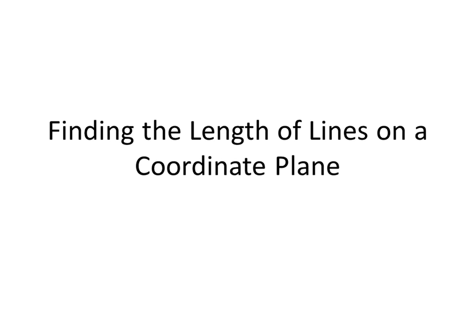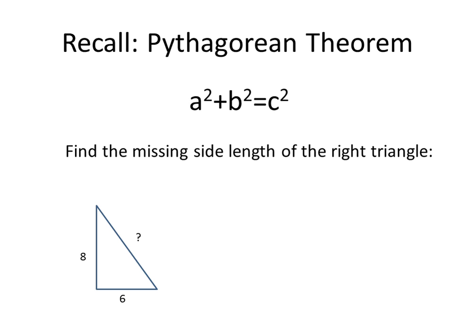We are starting a new standard called coordinate geometry and in this video we're going to be finding the length of lines on a coordinate plane. Recall that the Pythagorean theorem is a squared plus b squared equals c squared. Find the missing side length of the right triangle.